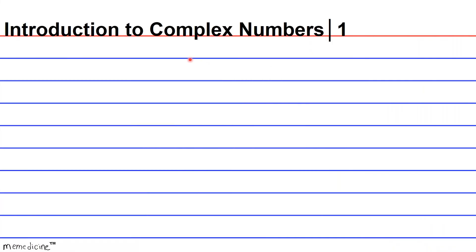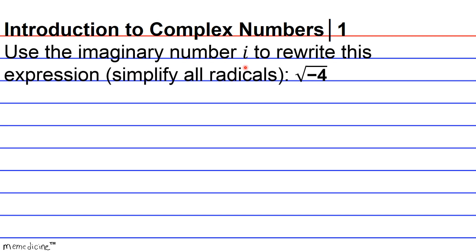Introduction to complex numbers 1. Use the imaginary number i to rewrite this expression. Simplify all radicals: radical negative 4.